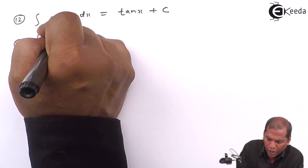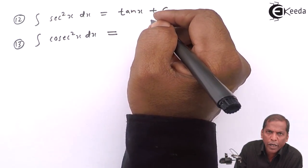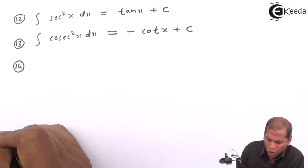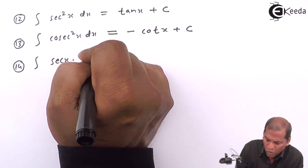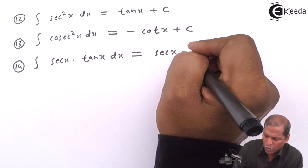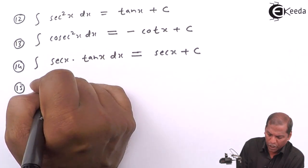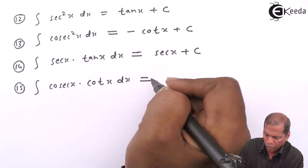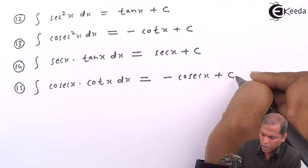Thirteenth formula: integral cosec squared x dx is equal to minus cot x plus c. Integral sec x tan x dx is equal to sec x plus c. Integral cosec x into cot x dx is equal to minus cosec x plus c.